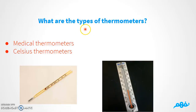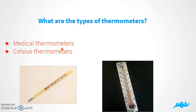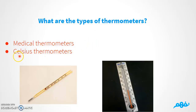So how many types of thermometers do we have? In this lesson, we will learn about two types of thermometers. Number one: medical thermometers. And the second type is Celsius thermometers.